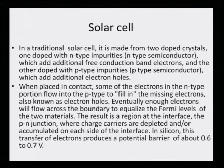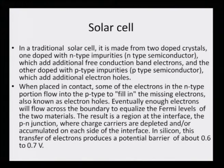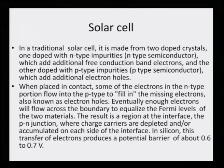Eventually enough electrons will flow across the boundary to equalize the Fermi levels of the two materials. The result is a region at the interface — the p-n junction — where charge carriers are depleted or accumulated on each side of the interface. In silicon, the transfer of electrons produces a potential barrier of about 0.6 to 0.7 volts.